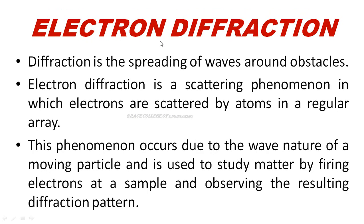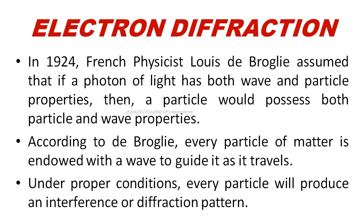The next topic is electron diffraction. Diffraction means the spreading of waves around obstacles — when waves encounter an obstacle, they bend around it. In 1924, de Broglie proposed that moving particles have wave nature. In proper conditions, every particle will produce an interference as well as a diffraction pattern.